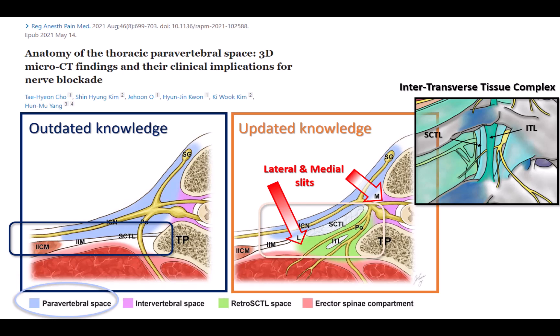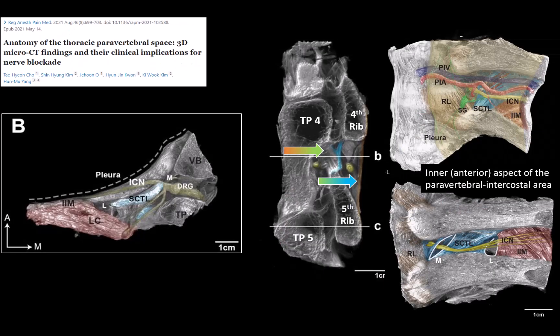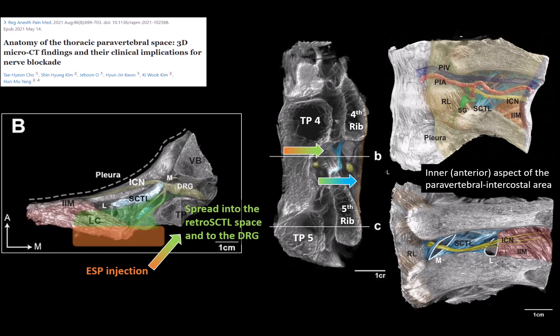The most important point is not that it is a complete barrier, but that there are gaps in it. Local anesthetic injected into one space can reach others and act on the structures contained within. In particular, if we perform an injection deep to the erector spinae muscle fascia within the ESP plane, there is no significant barrier to spread into the retro-SCTL space, where local anesthetic acts on both the dorsal ramus, but also the spinal nerve and dorsal root ganglion within the intervertebral neural foramen.